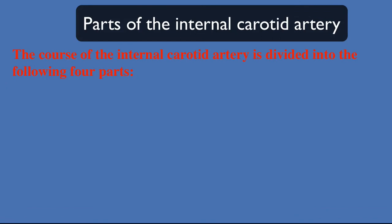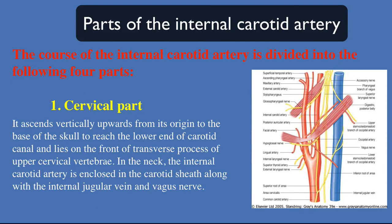The course of the internal carotid artery is divided into the following four parts. First part: the cervical part in the neck. It ascends vertically upwards from its origin to the base of the skull to reach the lower end of the carotid canal, and lies on the front of transverse processes of the upper cervical vertebrae.